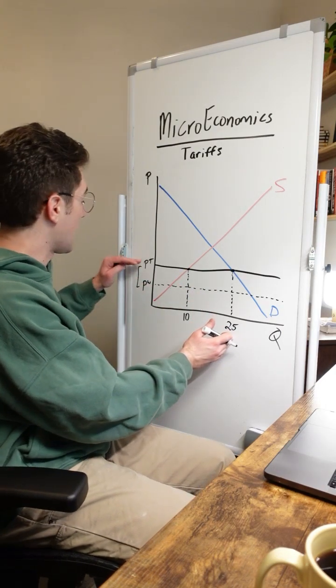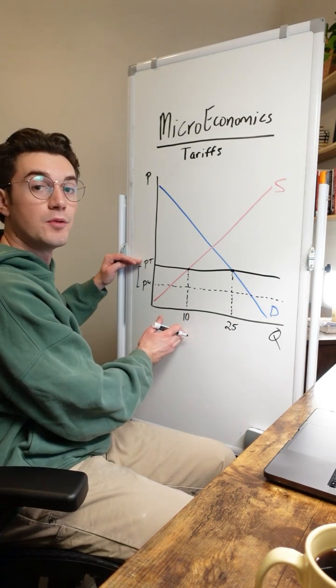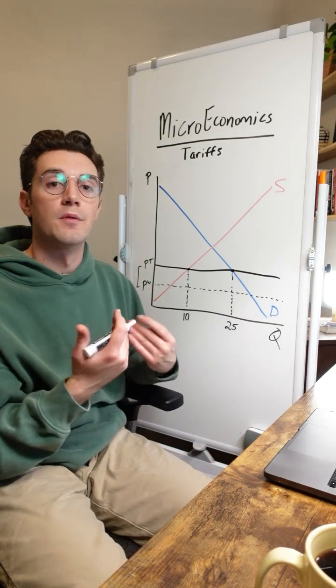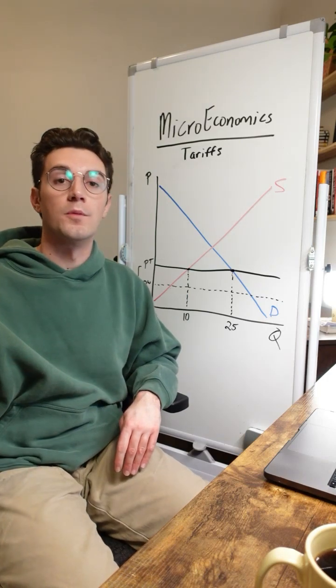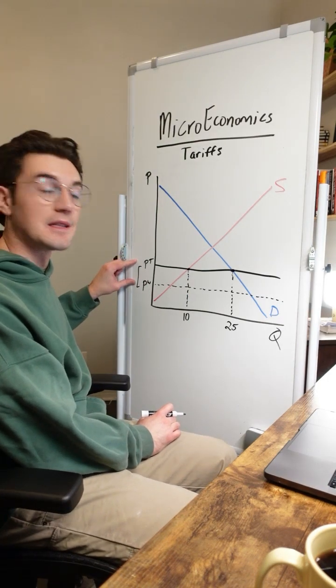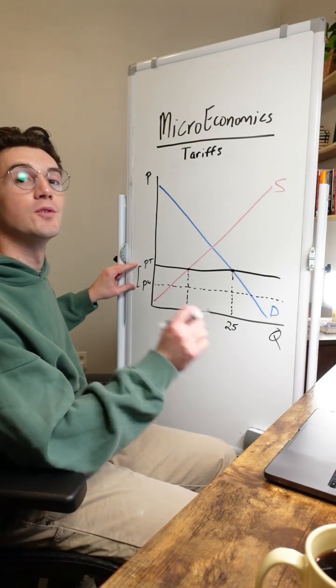Consumers demand 25 at this tariff price, but producers are only willing to supply 10. So they're going to import the remaining 15 from the world market. And the government's going to collect this tariff on each of those units imported.